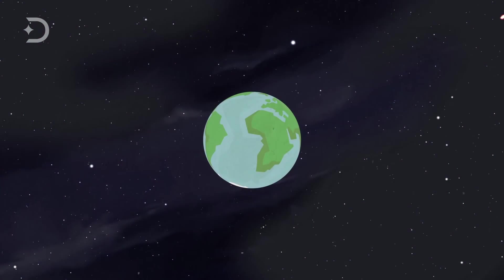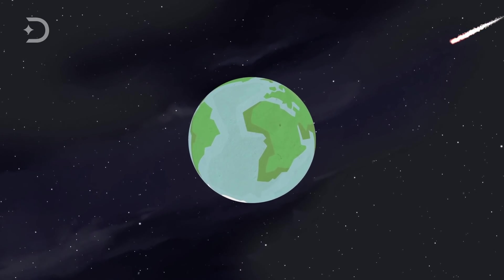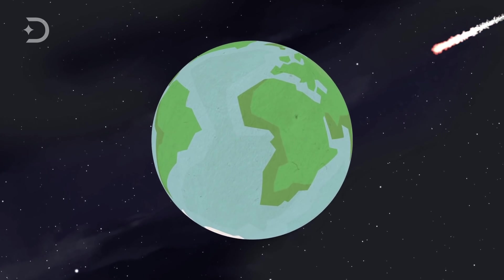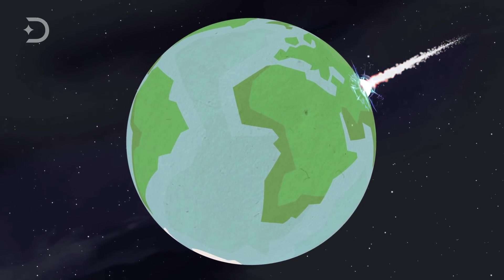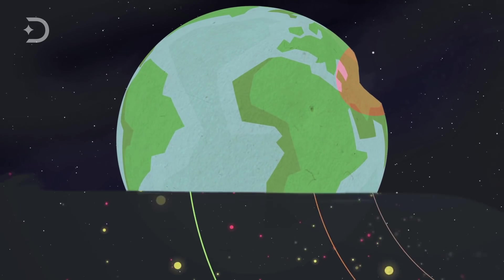Despite the fact that Bennu doesn't threaten the entire human race, it would still be a major natural disaster, the likes of which has never been seen before in modern times. Most of the damage would be concentrated within tens of miles of the impact site. The planet would be largely unaffected except for a giant crater left behind.